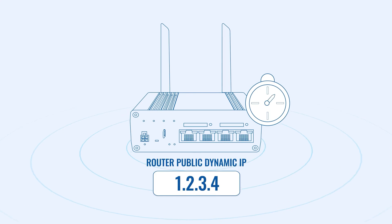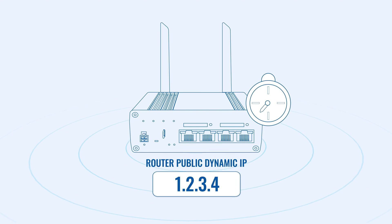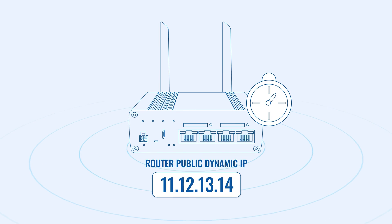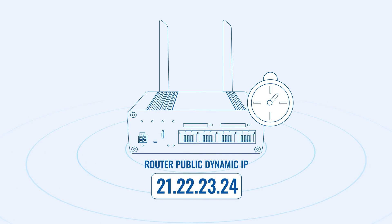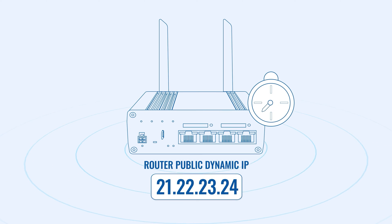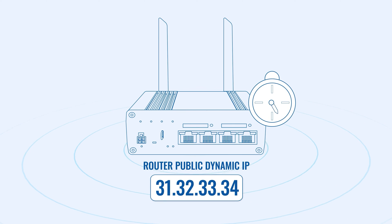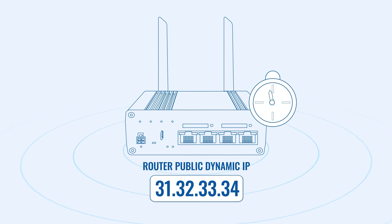A dynamic IP address has one peculiarity – it's not stationary. Imagine you have a router with a public, dynamic IP address that changes every 12 hours. For the first 12 hours, you'll know your router's IP and you'll be able to access it or any additional device within its LAN network, if your firewall settings allow it.